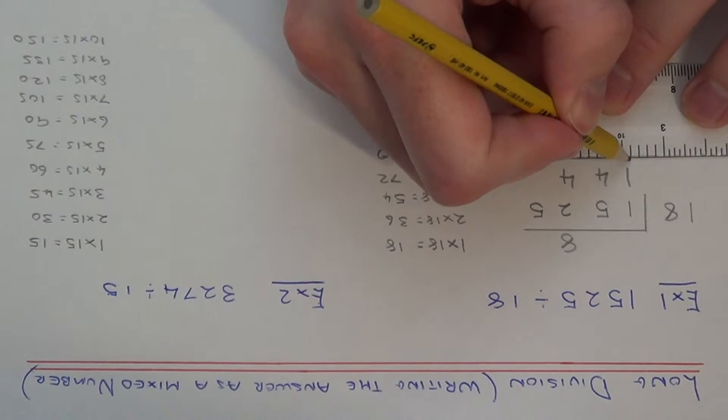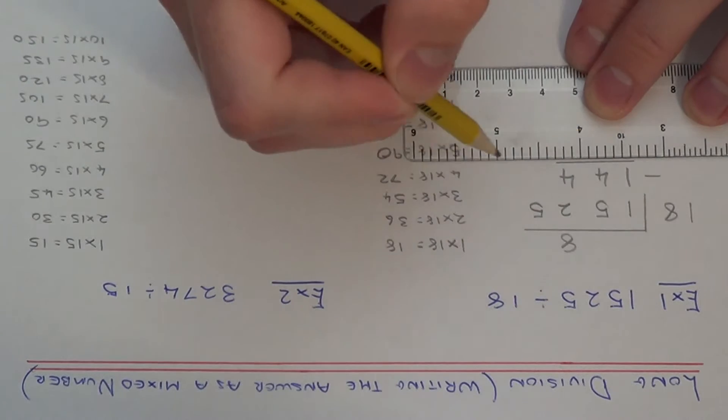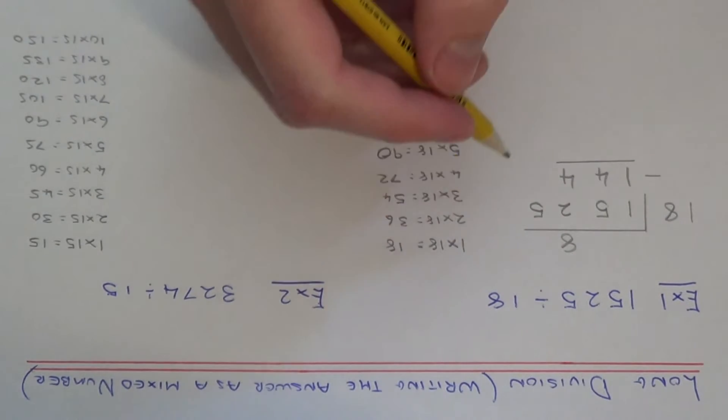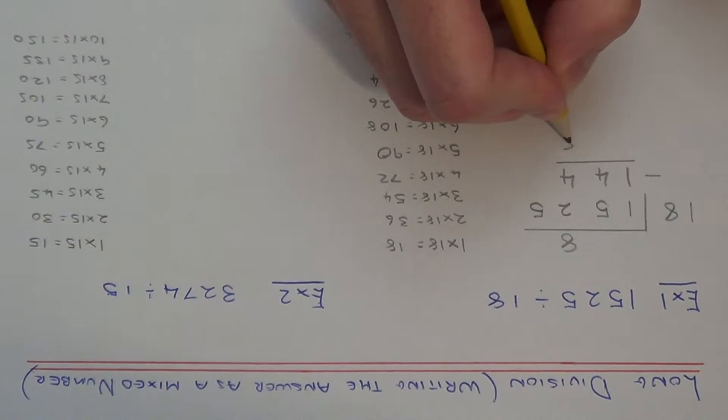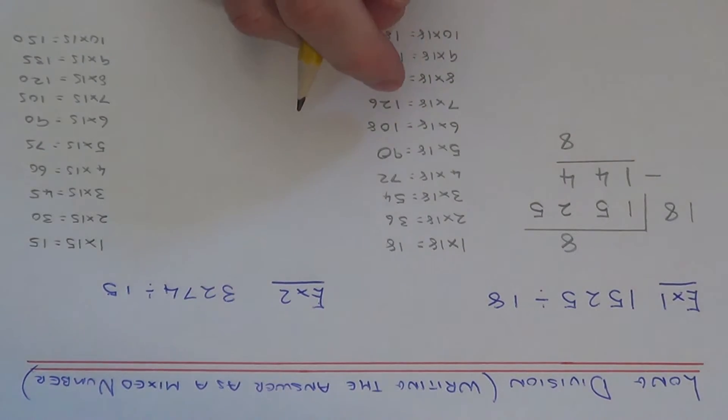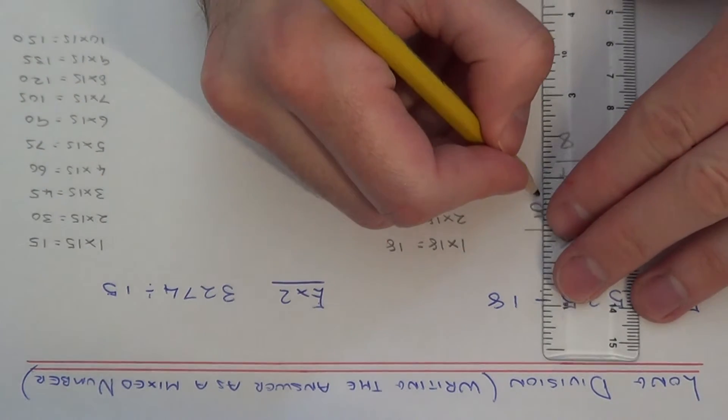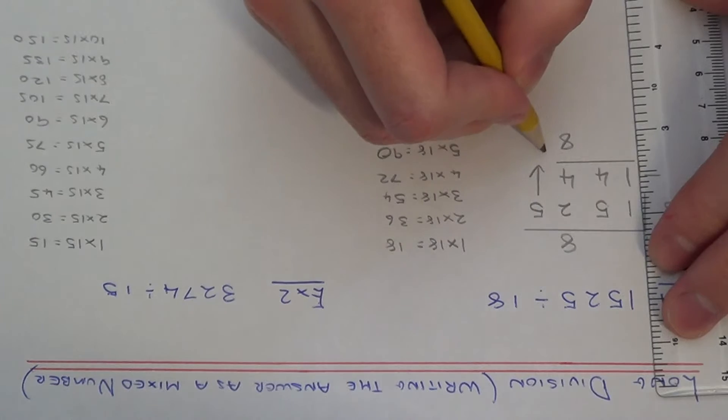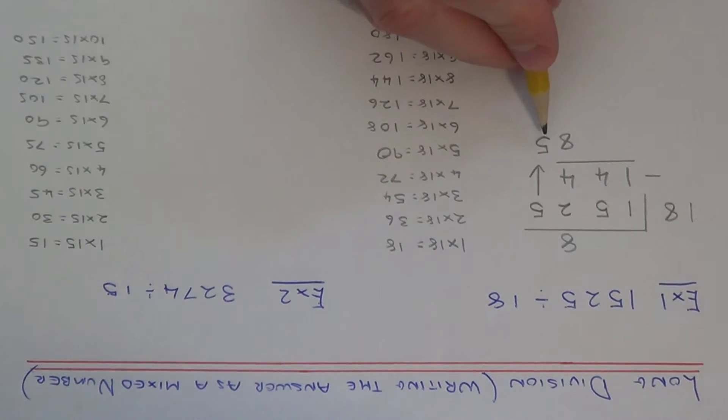If we work out 152 take away 144, that leaves us with 8. And we need to bring down the next digit, which is the 5, to our next line.